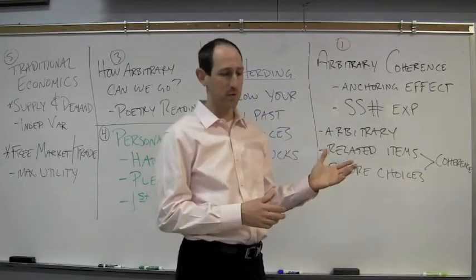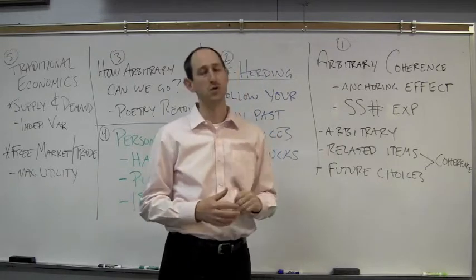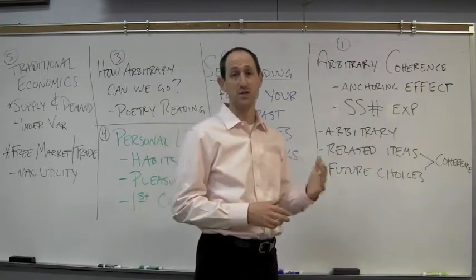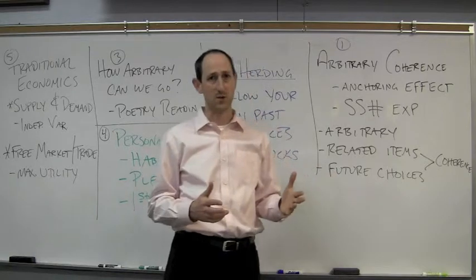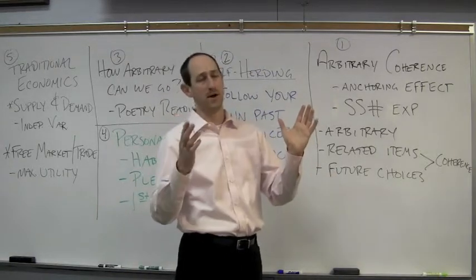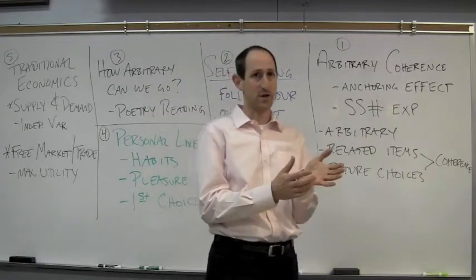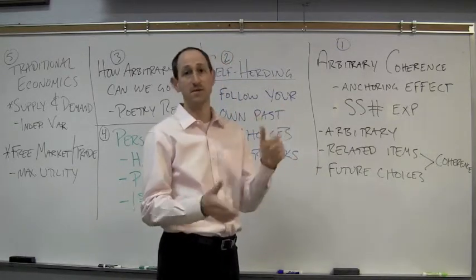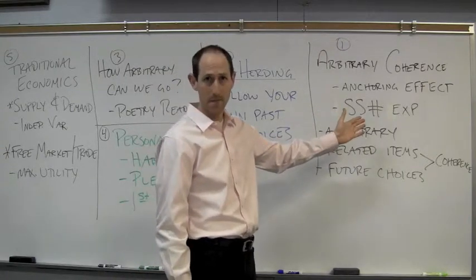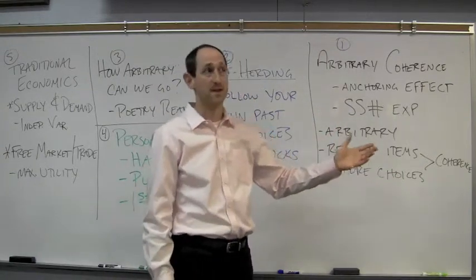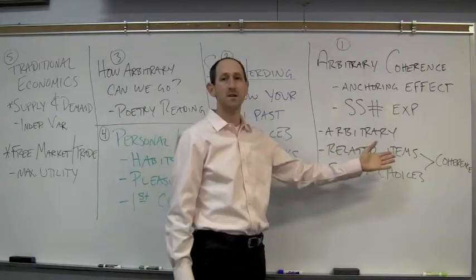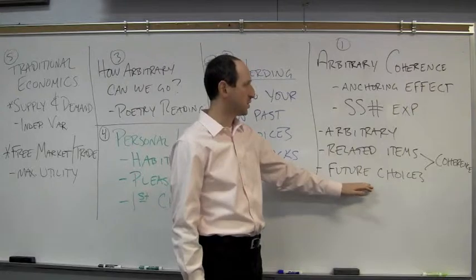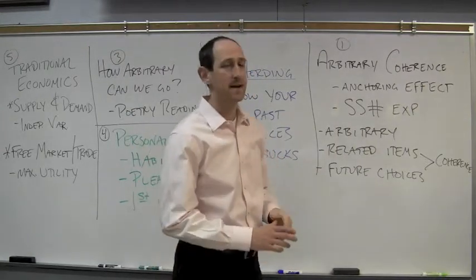For example, if your last two digits are 12 and you're asked would you pay $12 for a computer mouse, you say yes or no, then you might say $18 or $20 maximum. But if your last two digits are 64, you end up saying something like $49 maximum — two very different places for the same item based on a completely arbitrary anchor. For related items like a keyboard, prices tend to stay near the anchor — they cohere to it.